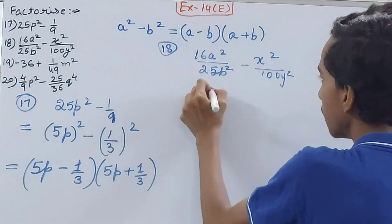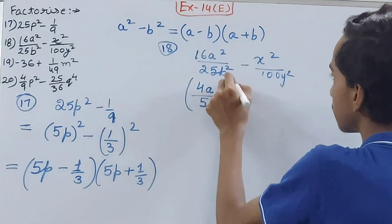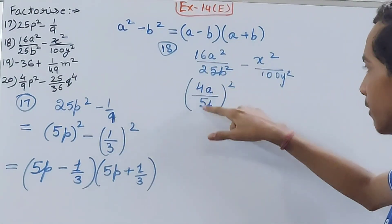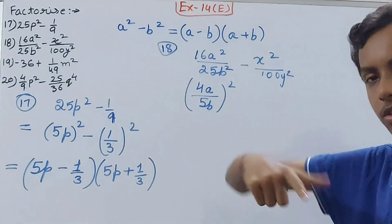So 4a can be written as 16a², and 5b whole square that will be giving you 25b². When you open the bracket up.